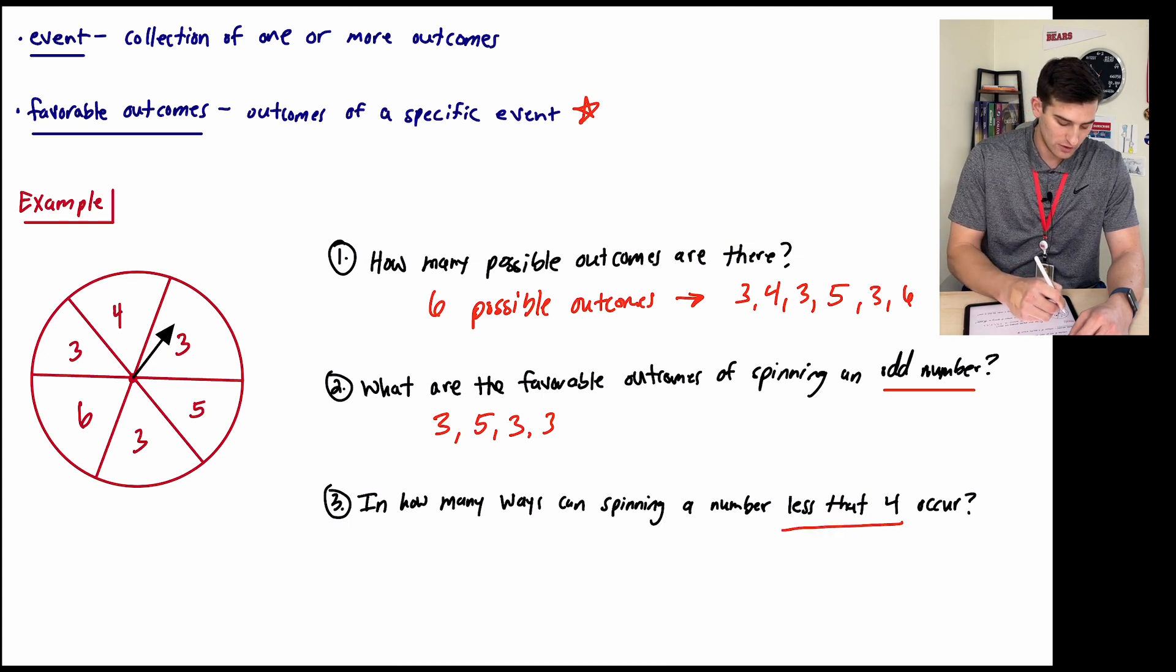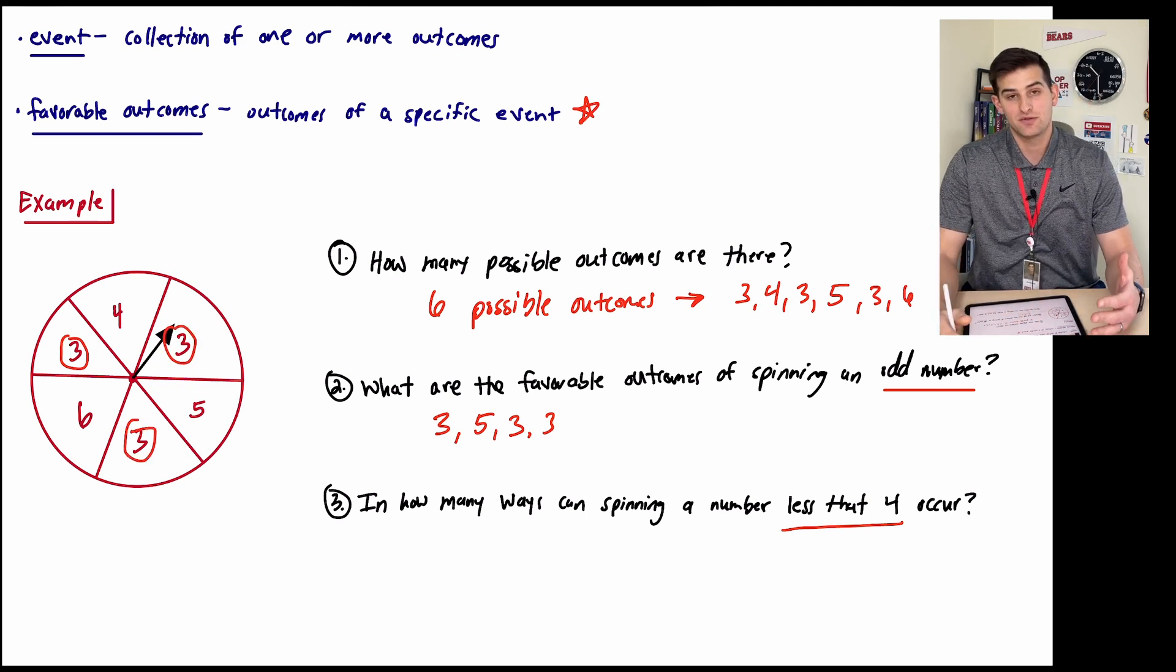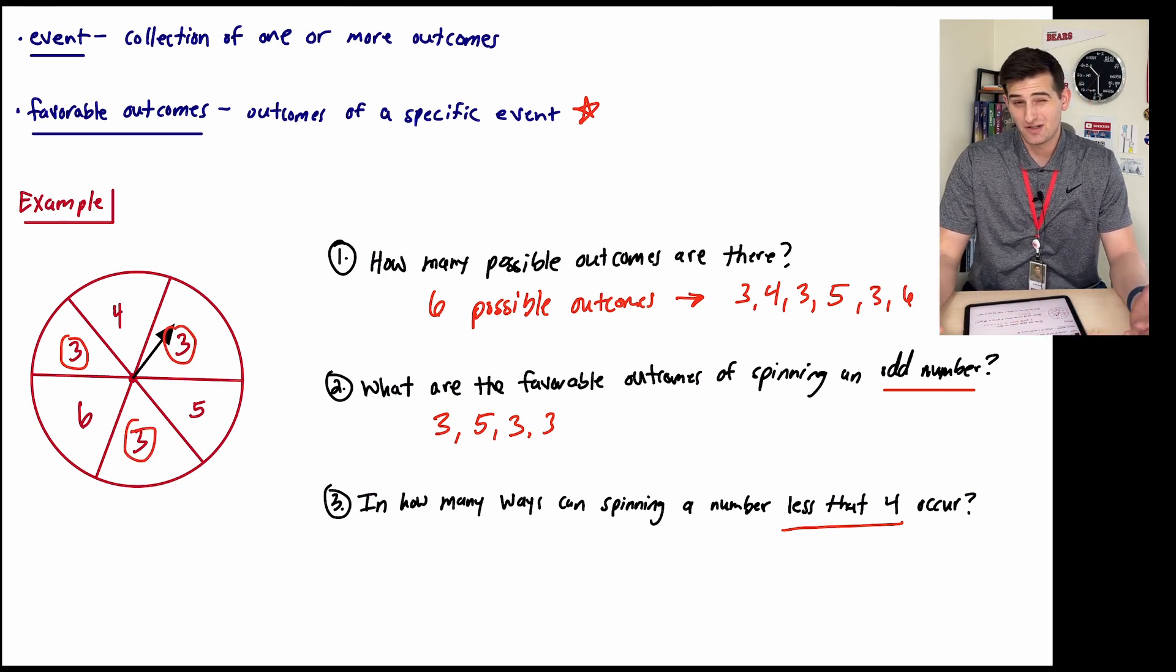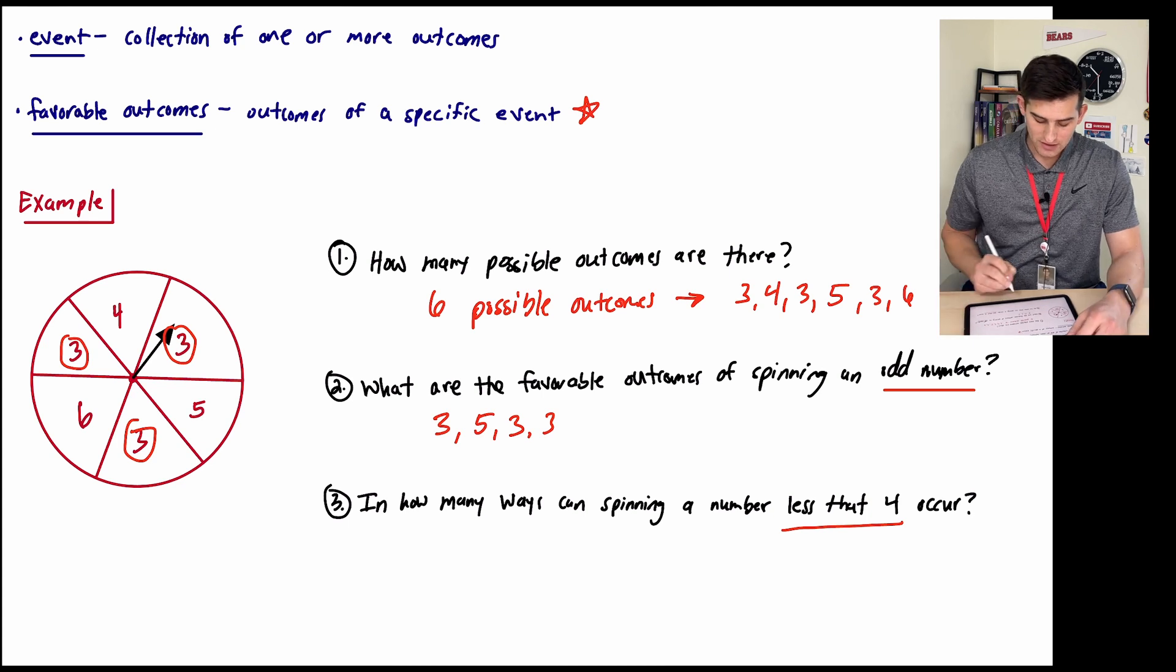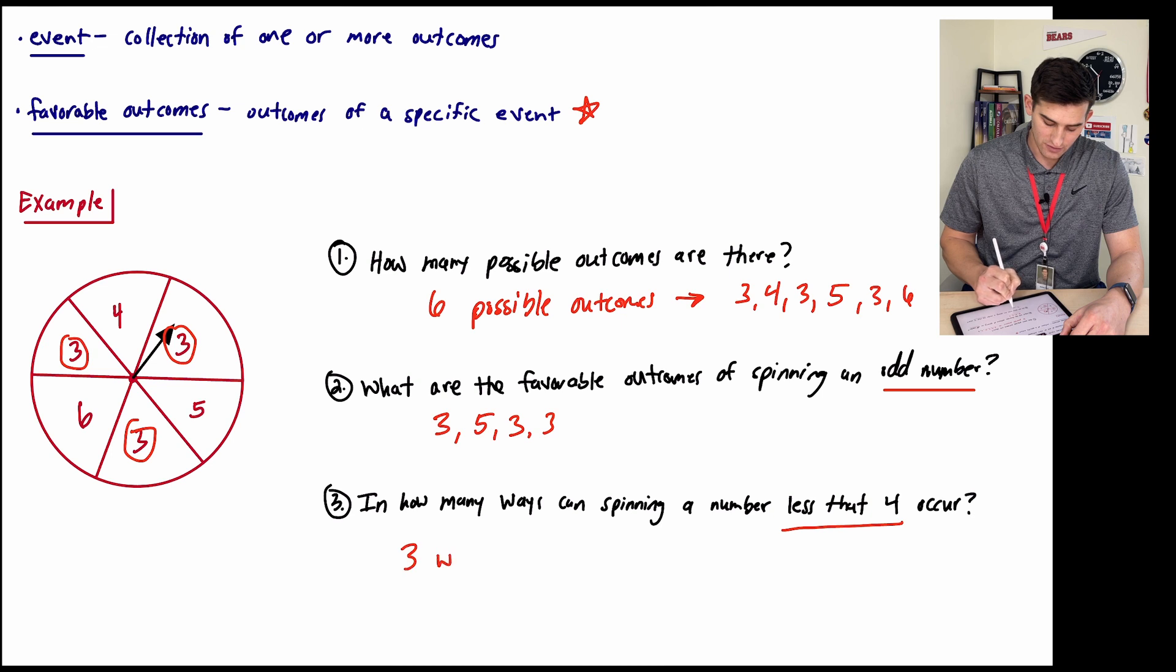So now let's look at our numbers here that are less than four. That would be 3, 3, and 3, because our other two numbers are 4, 5, and 6. And obviously those numbers are not less than four. So in how many ways can spinning a number less than four occur? That could occur in three ways.